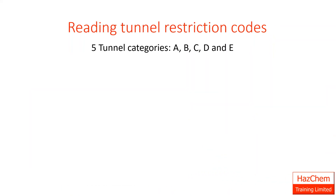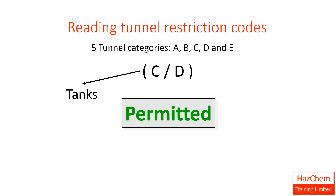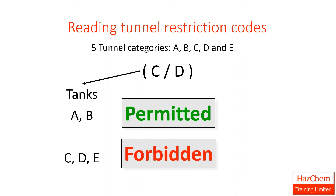So how do we read a tunnel restriction code? There are five tunnel categories: A, B, C, D and E. Every tunnel is assigned a letter. The restriction code from the transport document earlier was C, D. The first letter applies to tanks, so we will be permitted to use what comes alphabetically before or to the left of C — that is A and B — and forbidden from using C, D and E.